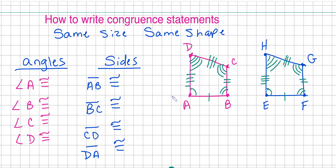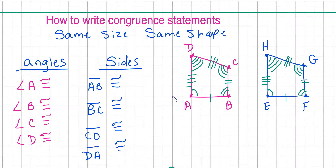I'm going to teach you how to write congruency statements. We have two figures here, and the figures are congruent, which means that figure ABCD is the same size and the same shape as EFGH. If two figures are congruent, they are the same size and the same shape, so therefore they're going to have congruent parts, and we're going to go through and find the congruent parts.